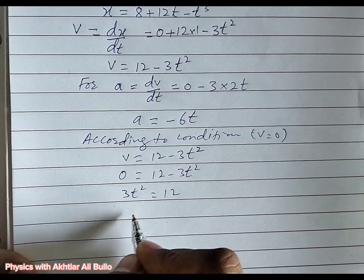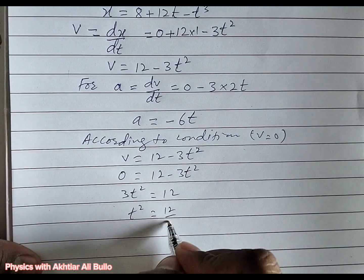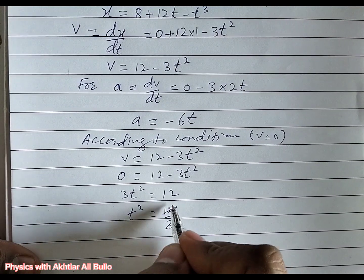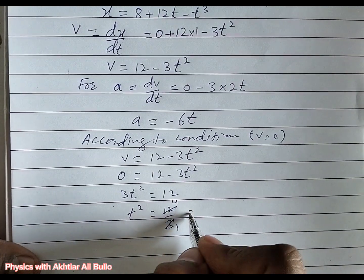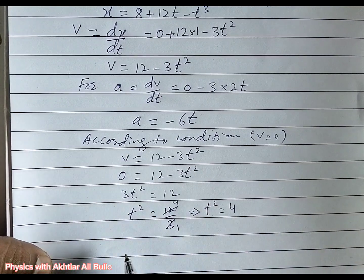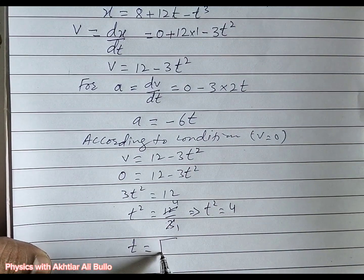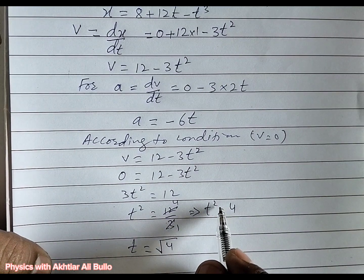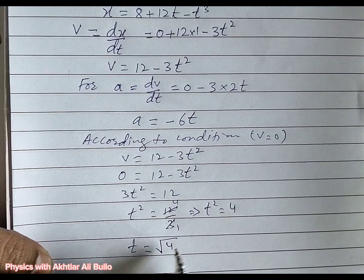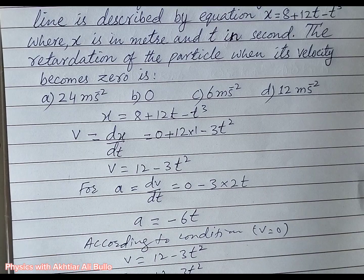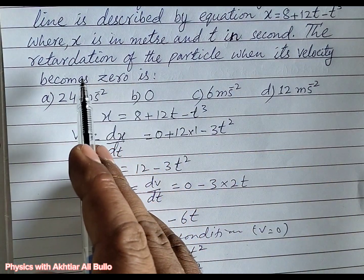So 3t² = 12, therefore t² = 12/3 = 4, so t = √4 = 2 seconds. Time is obtained as 2 seconds.